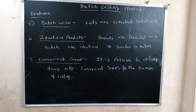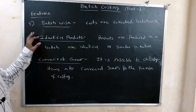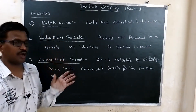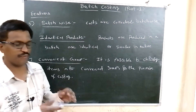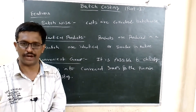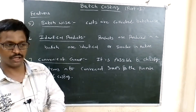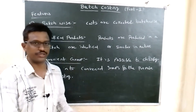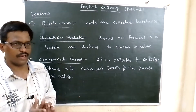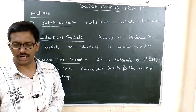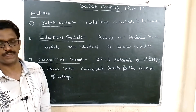Some more features of batch costing. Costs are calculated batch-wise. For example, if a particular batch produces 5,000 units, then the cost per 5,000 units is calculated. If another batch produces 10,000 units, the cost for that batch is determined. Total cost and cost per unit are both calculated batch-wise.